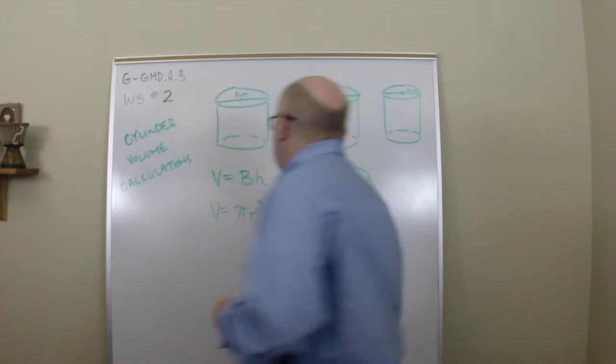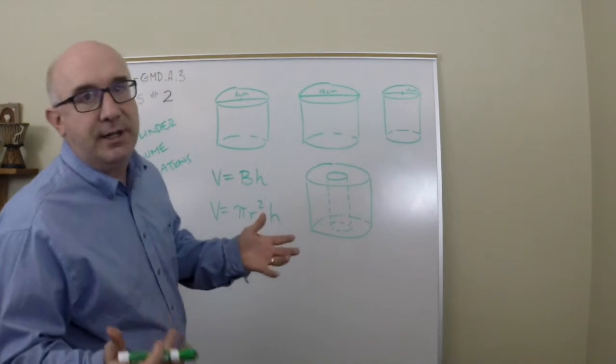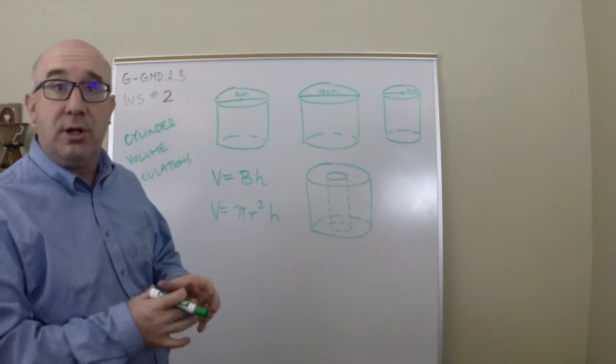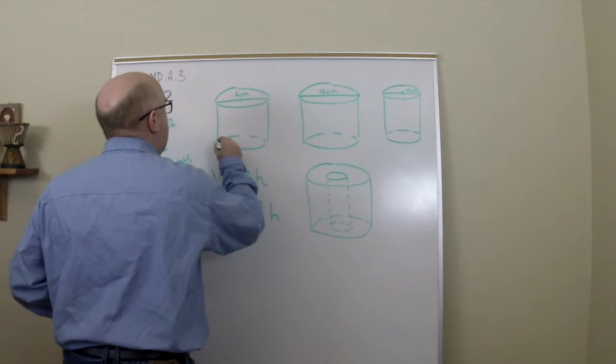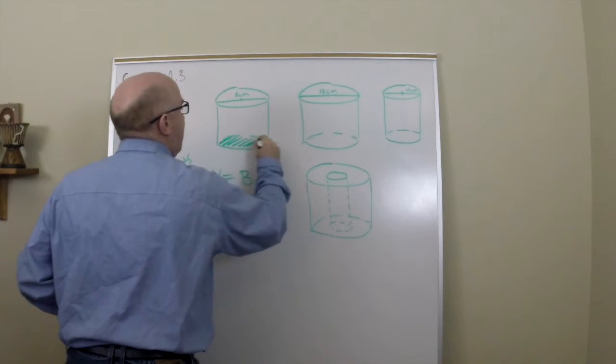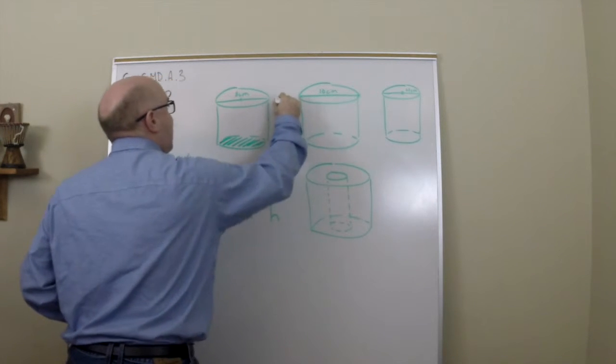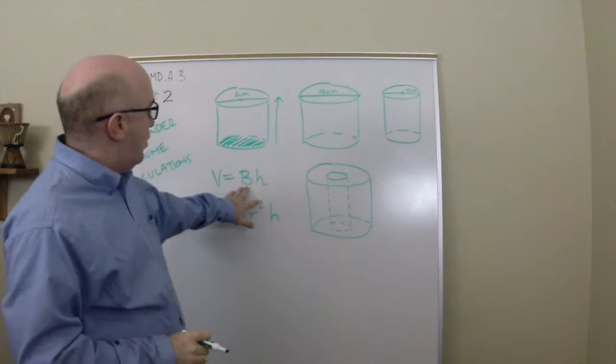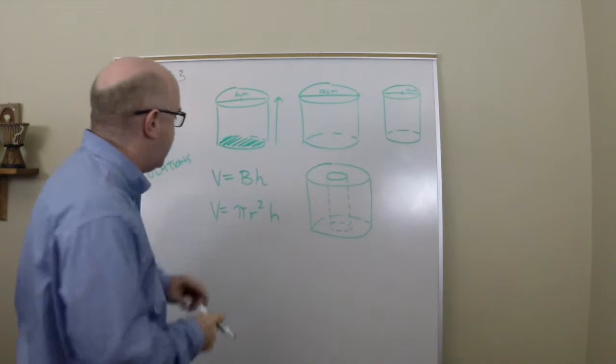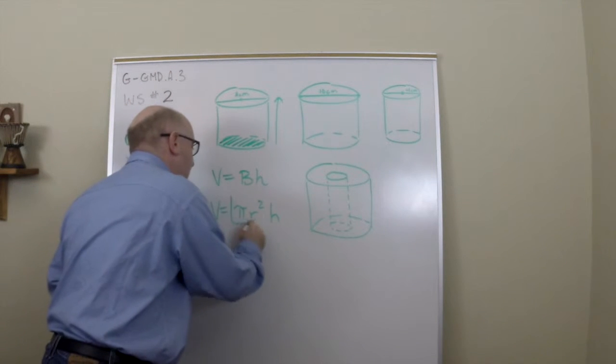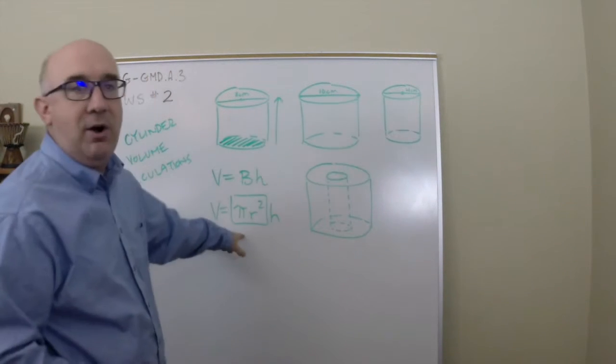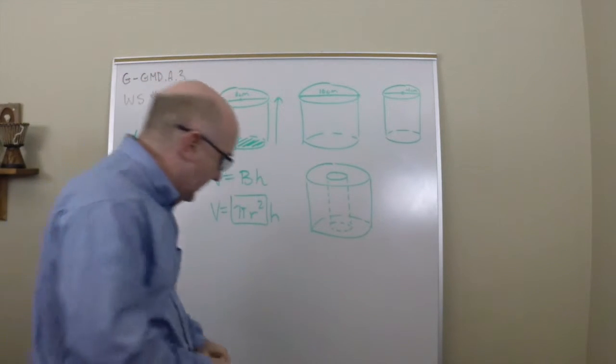We've already established the volume is found by BH using the same kind of idea that in all of our cylinders we're using circular bases. The idea would be to take one circular region and then stack it over that height. So one base times the height, in this case the base will be a circular region pi r squared stacked over a given height.